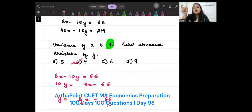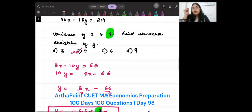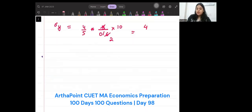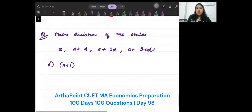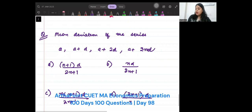It's a very good question for you to practice the concepts of regression. Now I will give you a question to practice on your own. Please practice this. So let me give you a question from mean deviation. Give me mean deviation of the series A, A plus D, A plus 2D and A plus 2ND from its mean. So options are N plus 1D upon 2N plus 1, ND upon 2N plus 1, and 2N plus 1D upon N plus 1. So you have to give me the mean deviation of this series, mean deviation from mean.